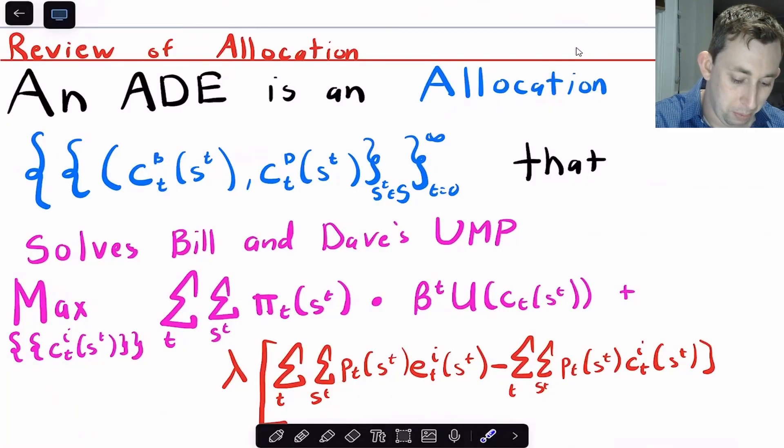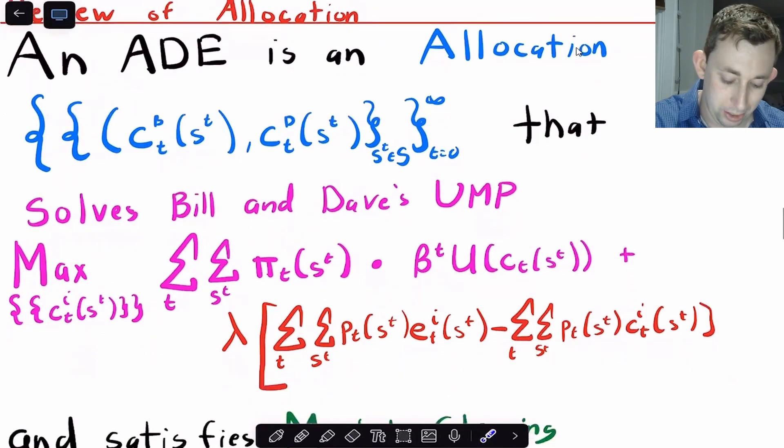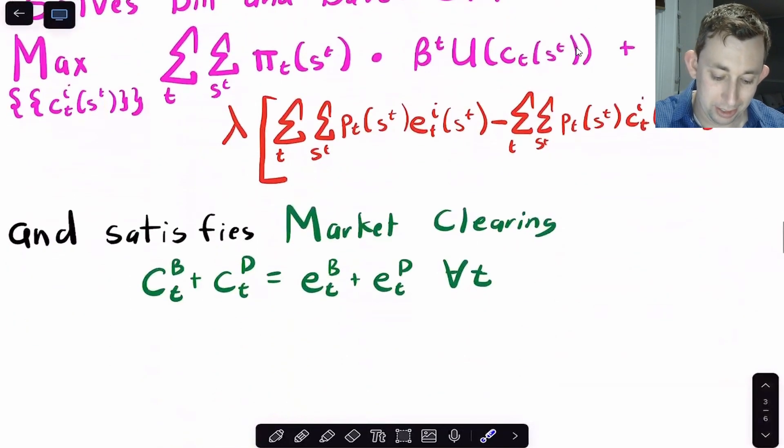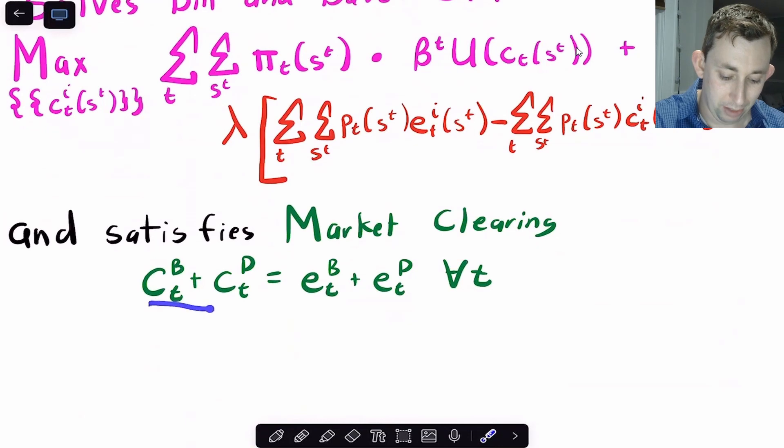So remember that an Arrow-Debreu equilibrium with uncertainty is an allocation. If we've got two people, Bill and Dave, it's going to be the consumption in each event history across all time. It's got to solve the utility maximization problem, which again is a double sum where we said this is the probability of a given state, this is the period utility in that state, and this is the budget constraint.